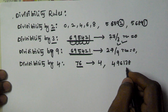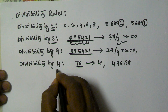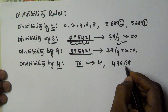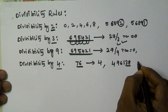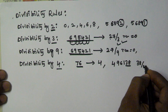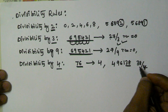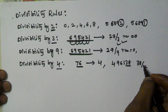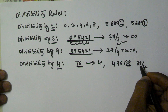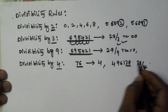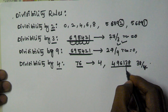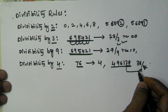Let's take another number: 496138. To check if this number is divisible by 4, we take the last two digits, which is 38, and check if it is divisible by 4. Since 38 is not divisible by 4, that means 496138 is also not divisible by 4.